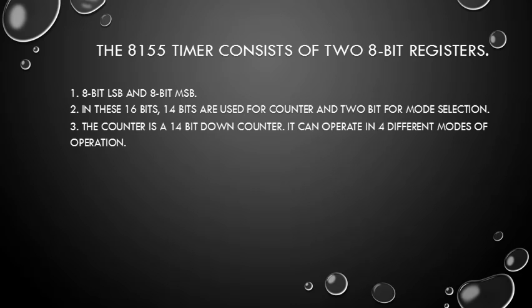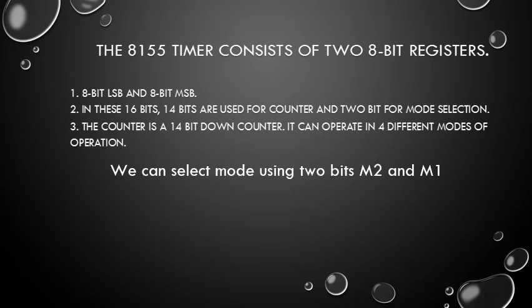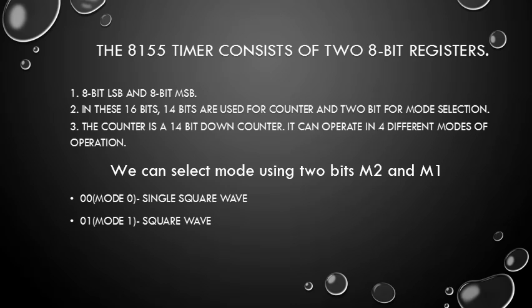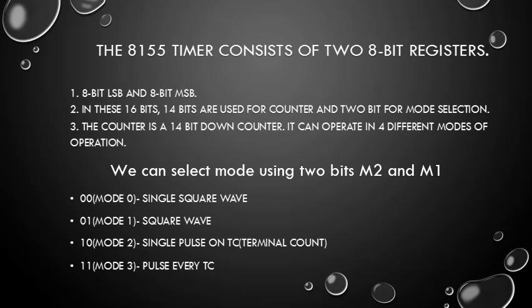The counter can operate in four different modes selected using bits M2 and M1. If M2 and M1 are both 0, it is Mode 0 and a single square wave is generated. When M2 is 0 and M1 is 1, it is Mode 1 and a continuous square wave is generated. For M2=1, M1=0 it is Mode 2, generating a single pulse on terminal count. For M2=1, M1=1 it is Mode 3, generating a pulse on every terminal count.